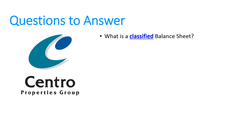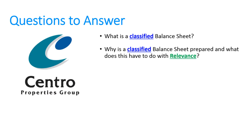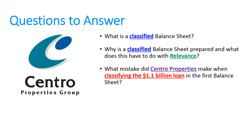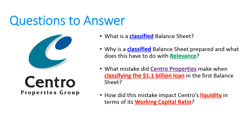So let's look at some review questions: What is a classified balance sheet? Why is a classified balance sheet prepared, and what does this have to do with relevance — why not just use one heading for assets and one for liabilities? What mistake did Centro Properties make when classifying the $1.1 billion loan? And lastly, how did this mistake impact Centro's liquidity in terms of its working capital ratio?